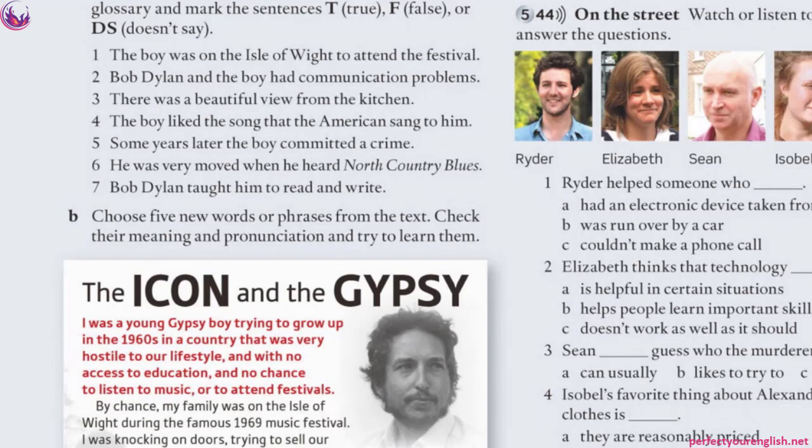Number 7: 'Bob Dylan taught him to read and write.' False — it was the vicar who taught him to read and write, not Bob Dylan.